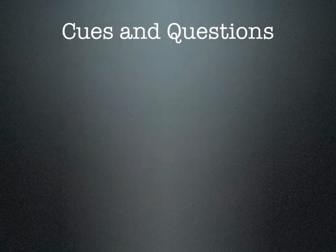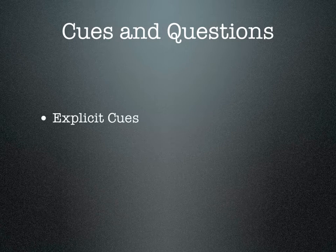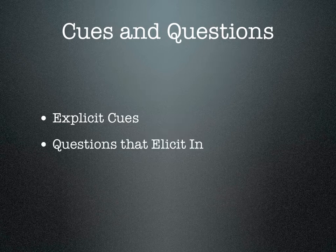There are three main types of cues and questions focused on in this book. The first is explicit cues. Cues are straightforward ways of activating prior knowledge, so explicit cues involve previewing exactly what you're going to be doing in that lesson. The second kind is questions that elicit inferences, which help students fill in a great deal of missing information. These questions are a little bit higher level than explicit cues.